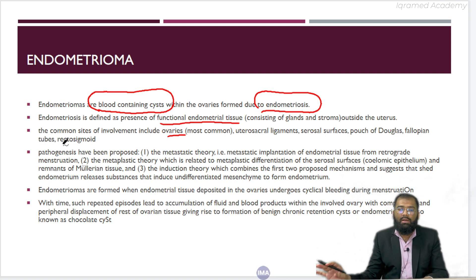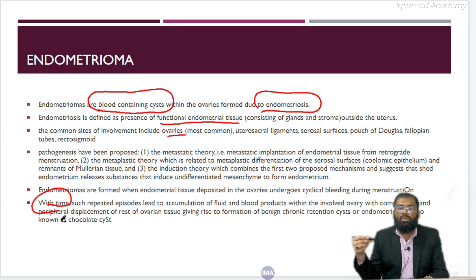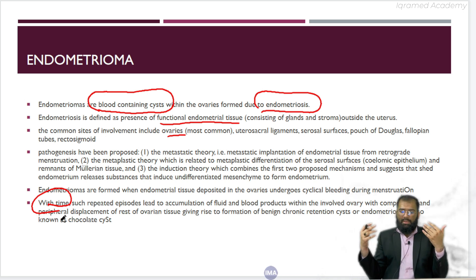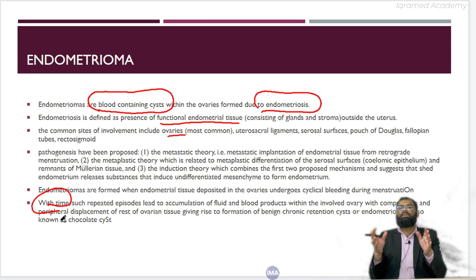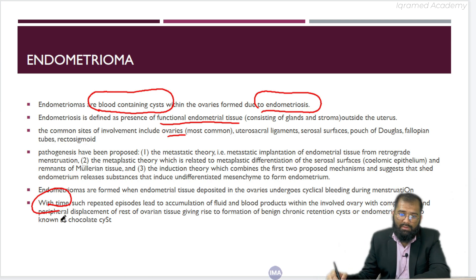Endometriomas basically keep on increasing with time, because with repeated cycles the blood and blood products go on accumulating there. With each cycle the symptoms keep on increasing; the patient will have increasing pain, and it will be deep-seated pain. With each cycle there will be pain on the sides of the ovaries.